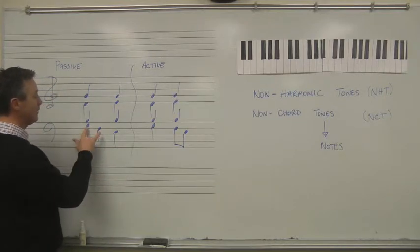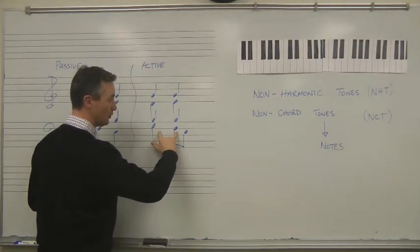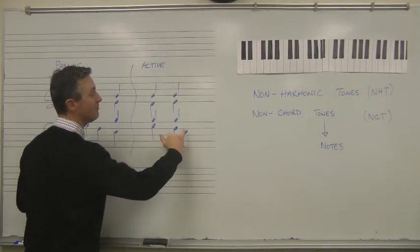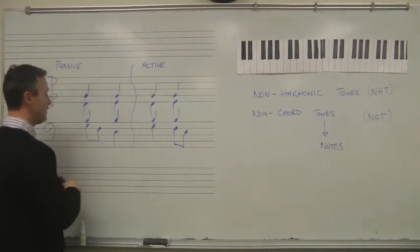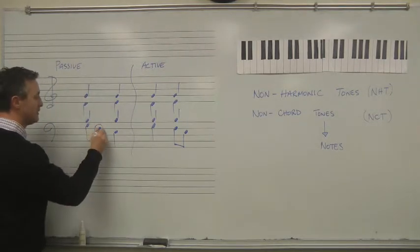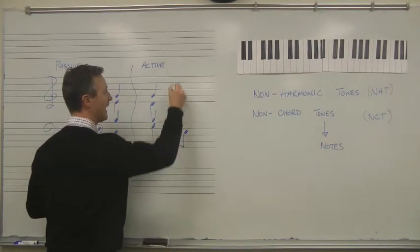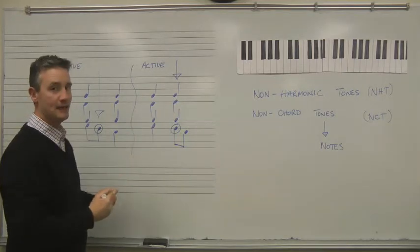Where here, the F occurred in between the two chords. Here, the F happens on the chord. It happens and clashes with the E minor chord. Then we hear the note that actually belongs in the chord. So here, the dissonance is in between. Here, the dissonance happens on the chord, with the rest of the notes in the chord.